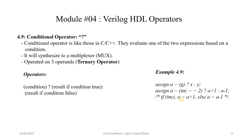Now let's look at the conditional operator, which is similar to what we have in C++. They evaluate to one of two expressions based on a condition. Wherever a conditional operator is used in our design, it will always synthesize to a multiplexer. It is also called a ternary operator because it operates on three operands. The syntax is: condition ? result_if_true : result_if_false.